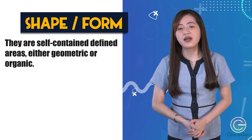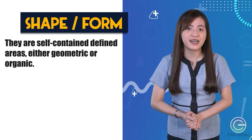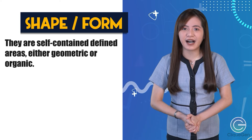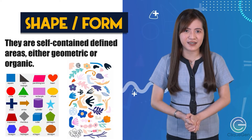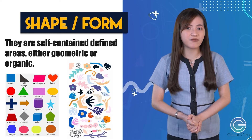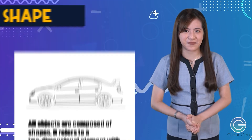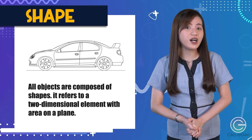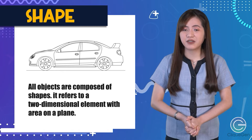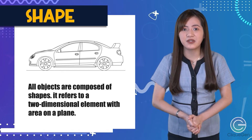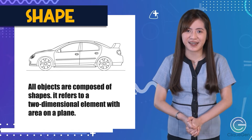Shape and form. They are self-contained defined areas, either geometric or organic. Shape and form are different from each other. Shape — all objects are composed of shapes. It refers to a two-dimensional element with area on a plane.